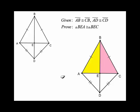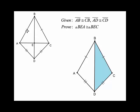This next one is a little tougher. Given that AB is congruent to CB and AD is congruent to CD, we're supposed to prove that the yellow triangle is congruent to the pink triangle, but we don't have enough information to do that directly. We need to first show that triangle ABD is congruent to triangle CBD by the Side-Side-Side postulate, since they share side BD.